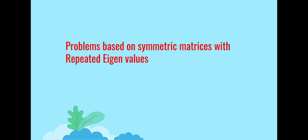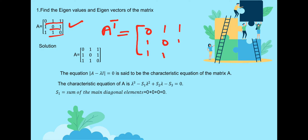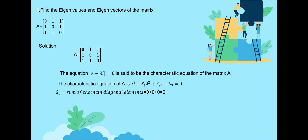Problems based on symmetric matrices with repeated eigenvalues. Find the eigenvalues of the given matrix. The matrix is a symmetric matrix — the rows are equal to columns: 0, 1, 1; 1, 0, 1; 1, 1, 0 — which is equal to A. The given matrix is a symmetric matrix. The eigenvectors have a property: they are pairwise orthogonal.